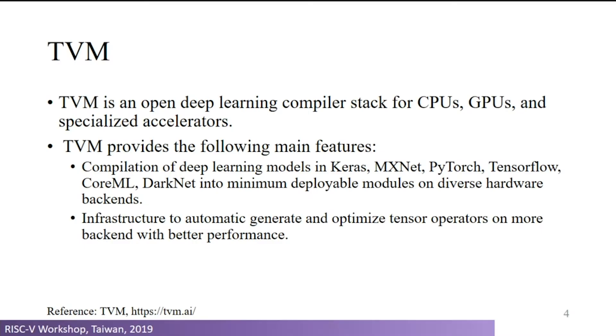TVM is an open machine learning compiler for CPU, GPU, and specialized accelerators. It provides two main features: one is reading different kinds of models from different frameworks and compiling them into an AI program for different kinds of hardware. The second is that during compilation you can always apply some hardware-specific optimizations into the program.